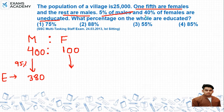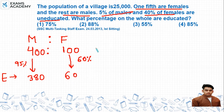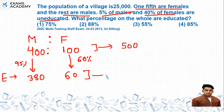Next, question में कहा गया कि 40% females uneducated हैं, तो 60% educated होंगी। तो 100 का 60% होगा 60 educated females। यहां से total population आएगी 400 + 100 = 500, और total educated population आएगी 380 + 60 = 440।